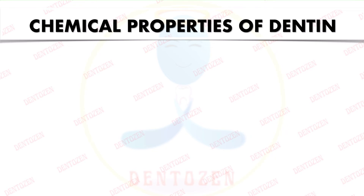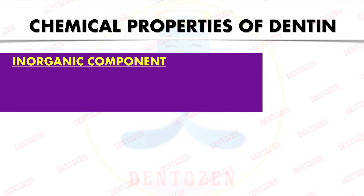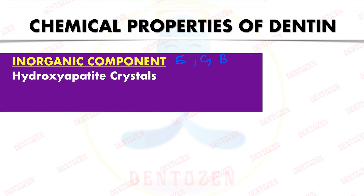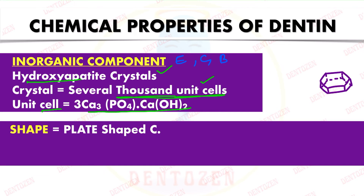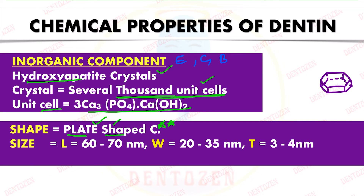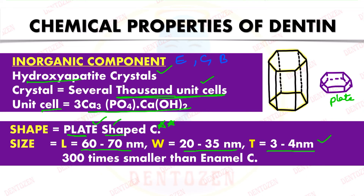Like other mineralized tissues — enamel, cementum, and bone — dentine has hydroxyapatite as its inorganic component, present in the form of crystals. Each unit cell has the formula of calcium hydroxyapatite. The crystals in dentine are small, plate-shaped crystals with a length of 60–70 nm, width of 20–35 nm, and thickness of 3–4 nm — approximately 300 times smaller than the crystals found in enamel.